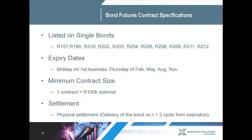Let's look at some of the bond futures characteristics. We have single bond futures — in other words, the future is on a single bond, and these are all government bonds. The expiry date is on the Thursdays of the February, May, August, November cycle. One contract is 100,000 nominal, and it's physically settled. This means that on expiration of the futures contract, the buyer and the seller will enter an agreement to buy and sell the underlying bond for a time three business days hence — T plus three from the expiration of the bond future.